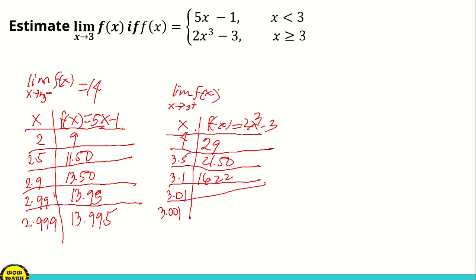If x is 3.1, our f of x is 16.22. If x is 3.01, our f of x is 15.12. If x is 3.001, our f of x is 15.01. So meaning, the limit of f of x as x approaches to 3 from the right is equal to 15.